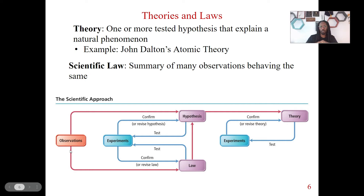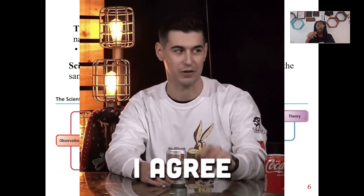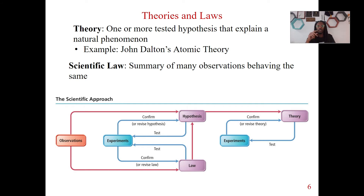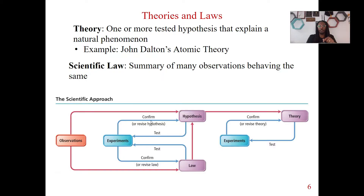We start out with observations — we observe something, and we see something that's happening. Let's go to the theory route first. We observe something, and then we come up with the hypothesis. We get the hypothesis from our observation. Now that we have our hypothesis, we're going to test it with experiments. I'm going to come up with a set of experiments, and either those experiments are going to confirm my data, and then I can go back to my hypothesis and experiment again to continue to test my hypothesis.